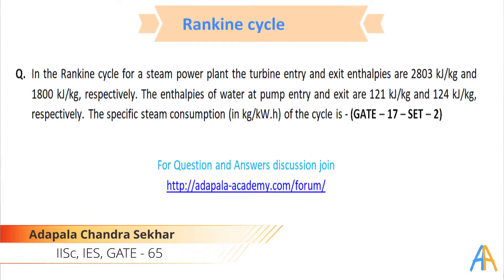In the Rankine cycle for a steam power plant, the turbine entry and exit enthalpies are 2803 kJ/kg and 1800 kJ/kg respectively. The enthalpies of water at pump entry and exit are also given. Read this carefully and immediately identify these values in the T-s diagram for the Rankine cycle.